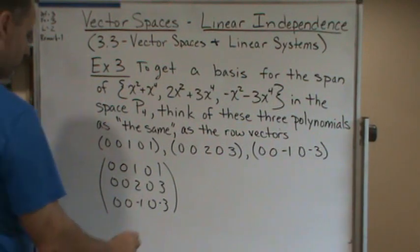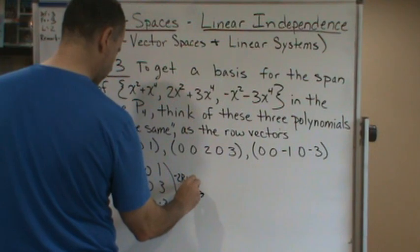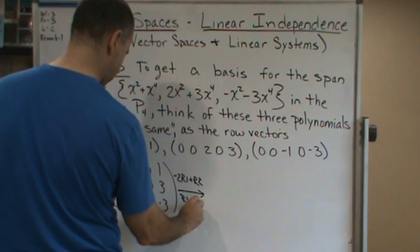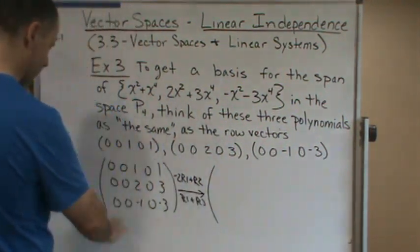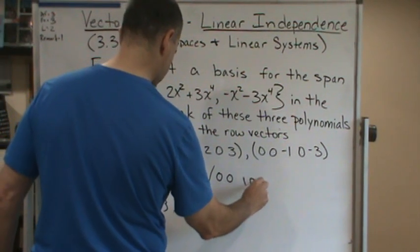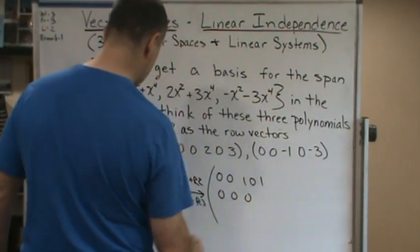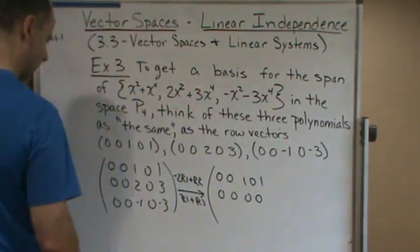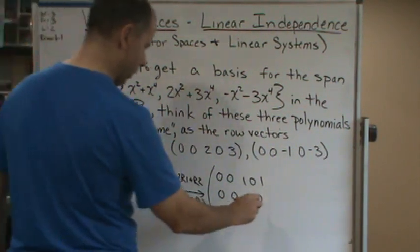Okay, so now if I row reduce this, let's start with negative 2 row 1 plus row 2, and just do row 1 plus row 3. Okay, so obviously these are not going to change, so 0, 0, 1, 0, 1, and then this one's going to become 0, 0, 0, 0, and negative 2. So negative 2 plus 3 is 1.